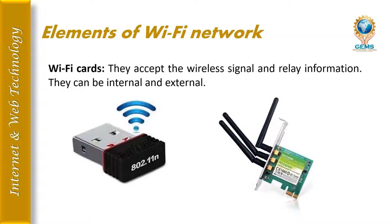The second element is Wi-Fi cards. The images show 802.11 Wi-Fi cards — one external type for laptops, and one PC card type that can be fixed inside the CPU on the motherboard of a desktop computer. Wi-Fi cards accept wireless signals and relay information. They can be internal or external.